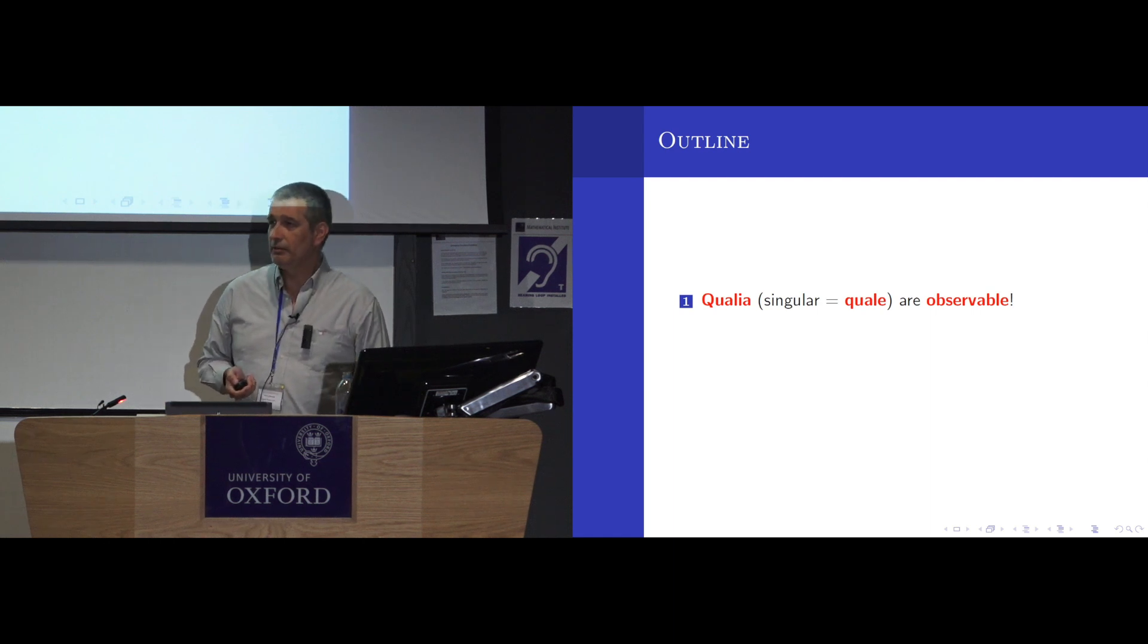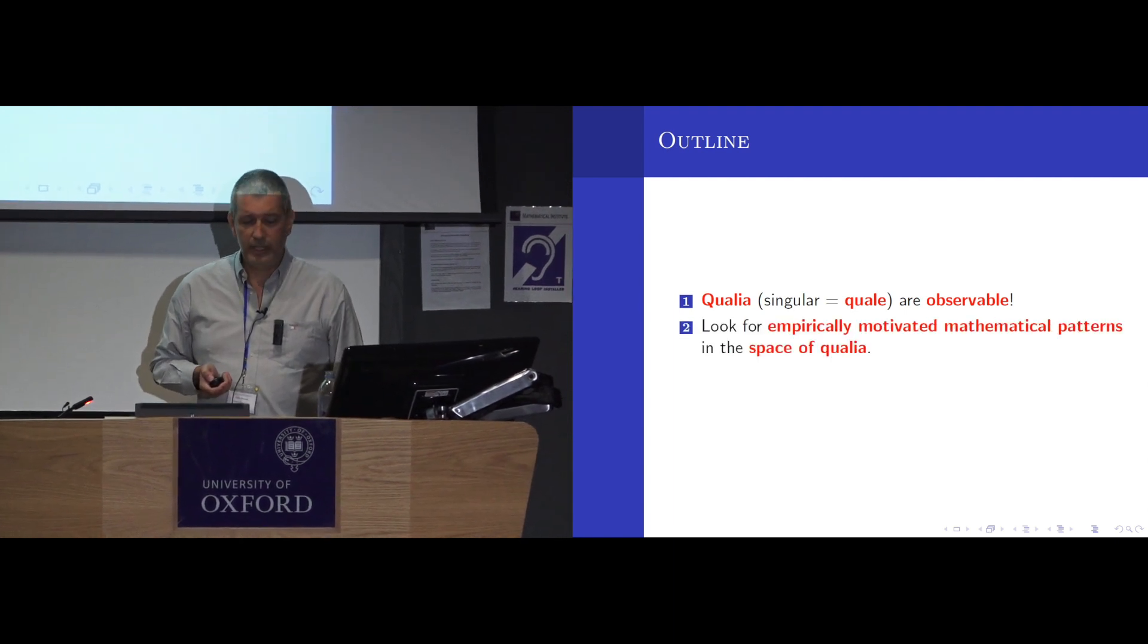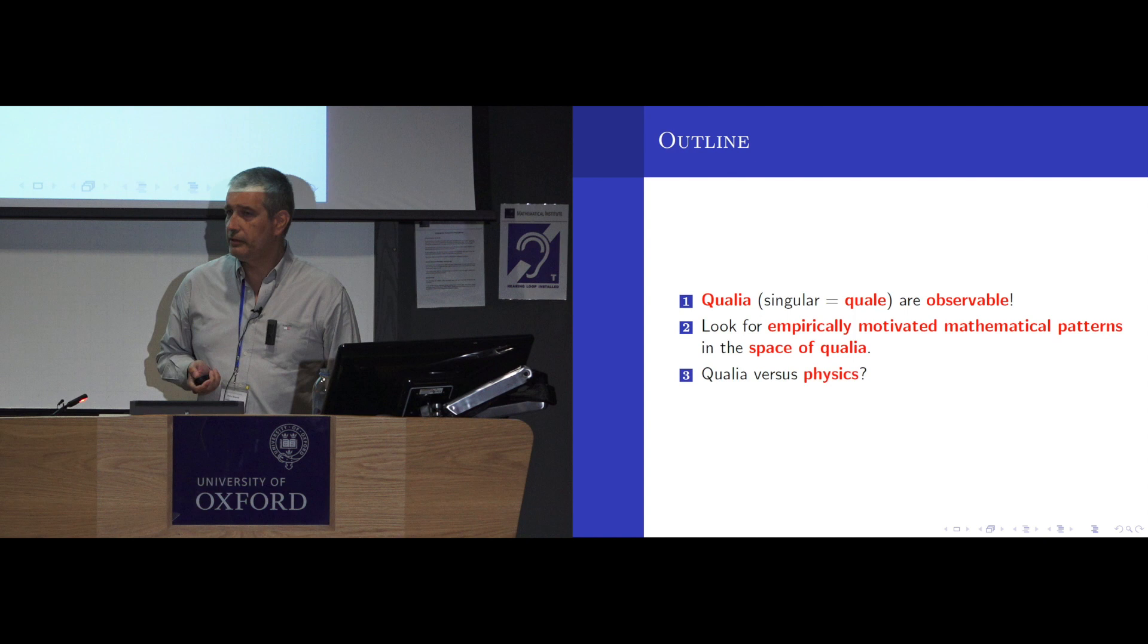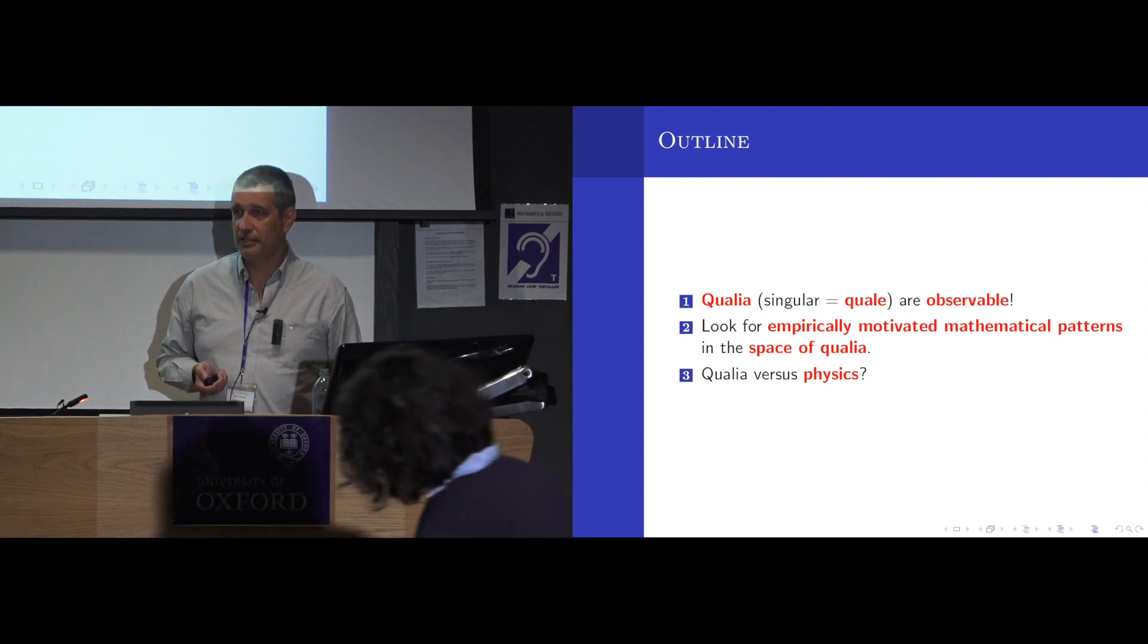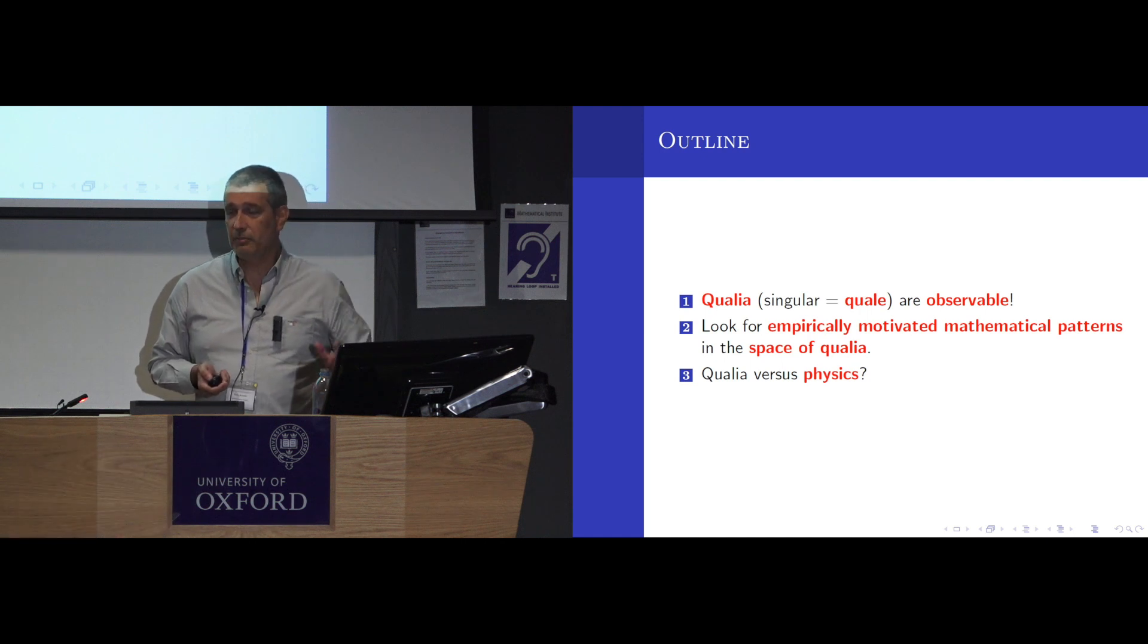So if you want to learn about qualia, one possible path is to really observe them very carefully. You could become a skillful meditator, whatever, but just look at them carefully. By doing that, one can detect some mathematical patterns and build a mathematical model. And after that, then one can try to compare that mathematical model to structures arising in physics and see if they match. So the purpose of this talk is to give a toy example of such a program using very simple principles. This is a really limited thing, and it is a work in progress, so I will welcome any comments.